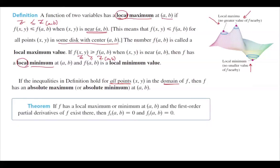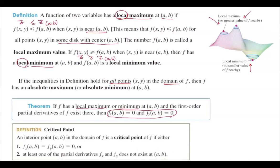Note that if f has a local maximum or local minimum and if the first-order partial derivatives of f exist, then the partial derivatives at that point must equal zero — that is, the rate of change in the direction of the x-axis and y-axis are both zero. An interior point (a, b) in the domain is called a critical point if either both partial derivatives at (a, b) equal zero, or at least one of them does not exist.